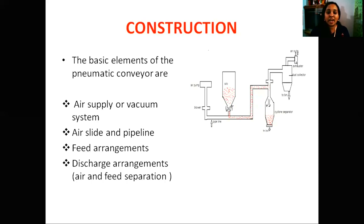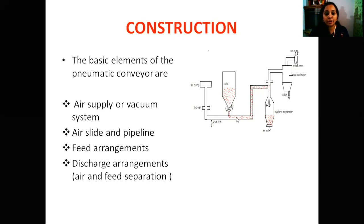Here are the figures showing the air slide and air slide chute assembly, though not fully visible in the picture. For the feeding arrangement, the hopper has a rotary feeder valve connected. This rotary feeder valve opens during the feeding period, connecting the hopper to the pipeline. This is where the air stream is introduced.